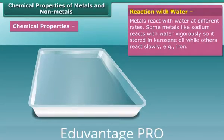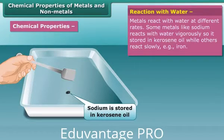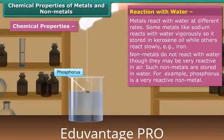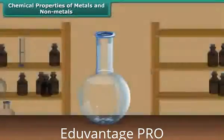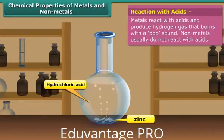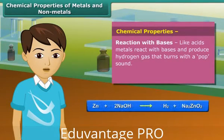Another chemical property of metals is their reaction with water. Most metals react with water vigorously or slowly. Sodium is stored in kerosene oil due to its highly reactive nature with air. Non-metals do not react with water. Phosphorus highly reacts with atmospheric oxygen, so it is stored in water. Regarding reaction with acids: metals react with acids and produce hydrogen gas, while non-metals don't react. You'll be surprised to know that like acids, metals also react with bases and produce hydrogen gas.